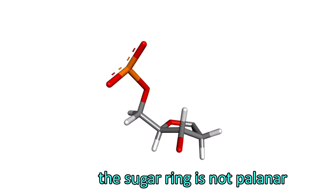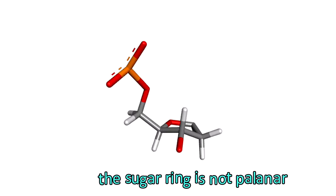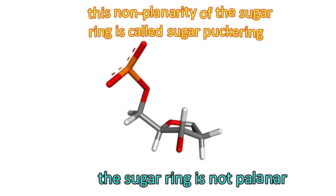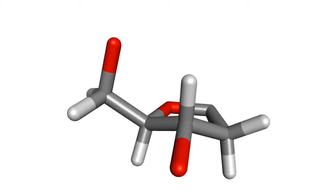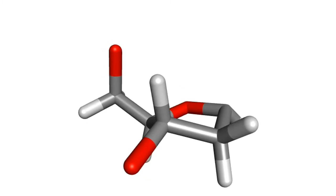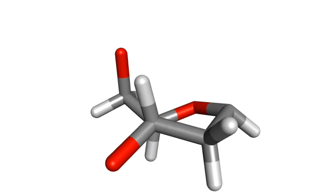Here, now you can see what I want to show you. The sugar ring is not planar. This non-planarity is termed as sugar puckering. You might think, what's the big deal if the sugar ring is not planar? Well, it is a big deal.